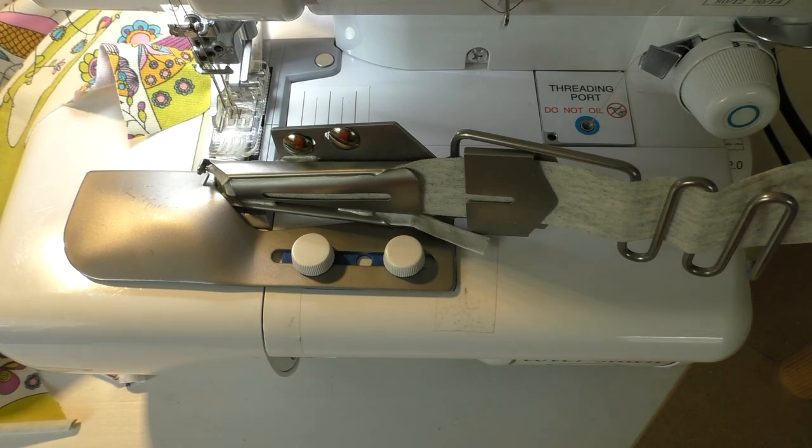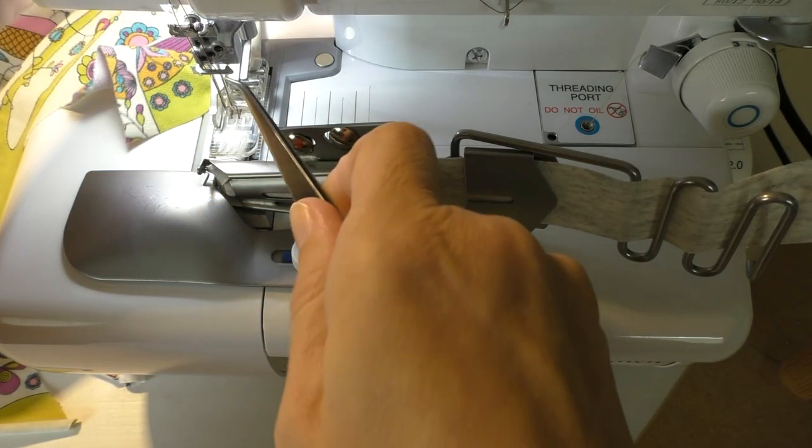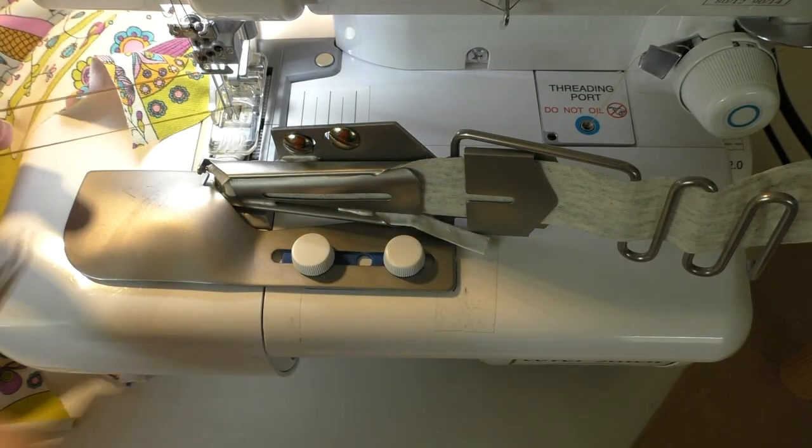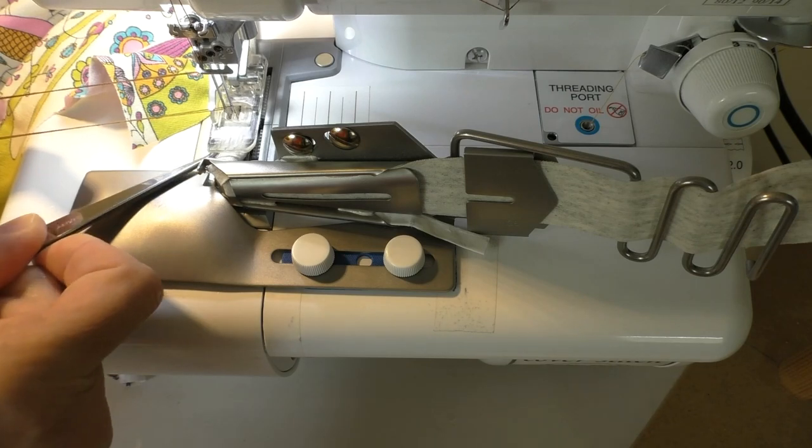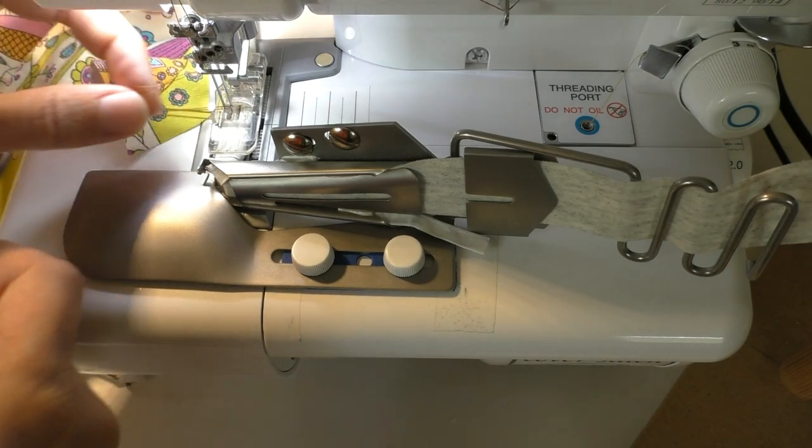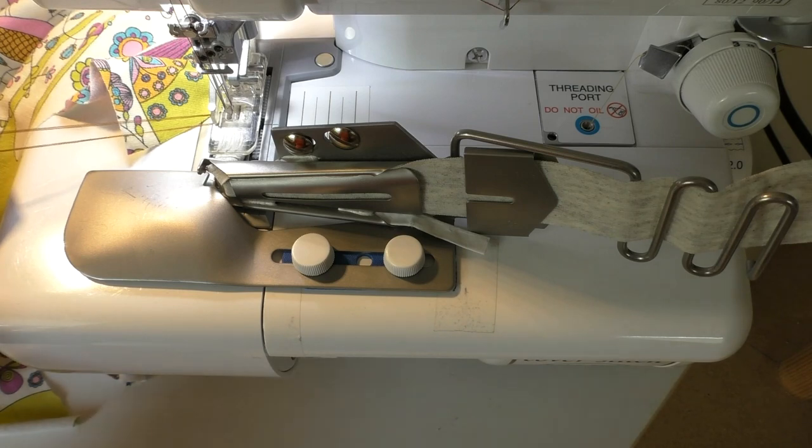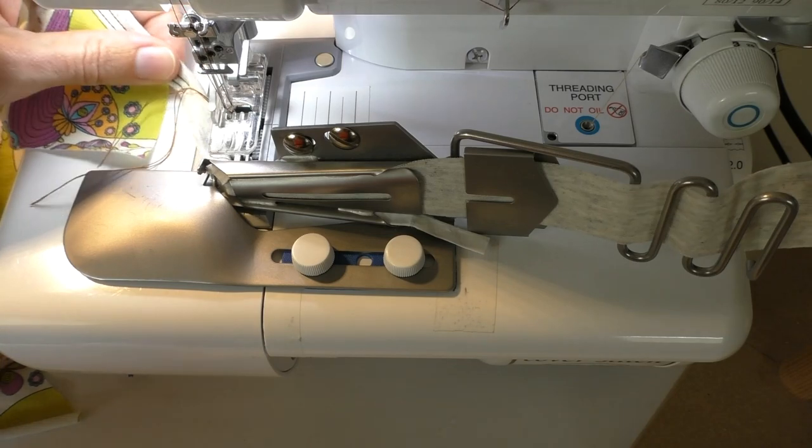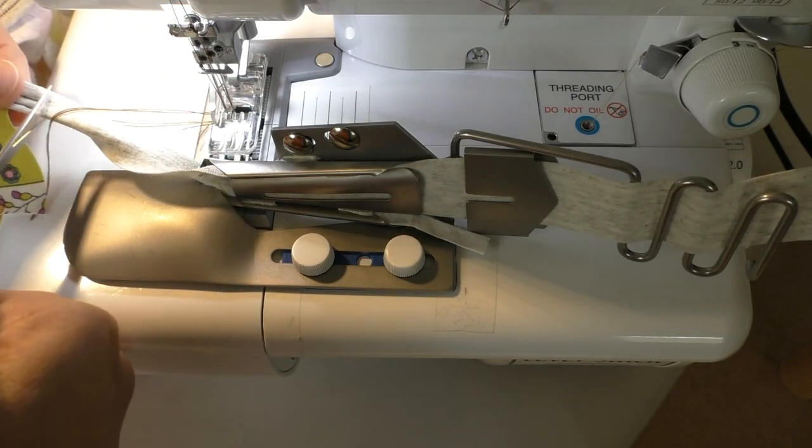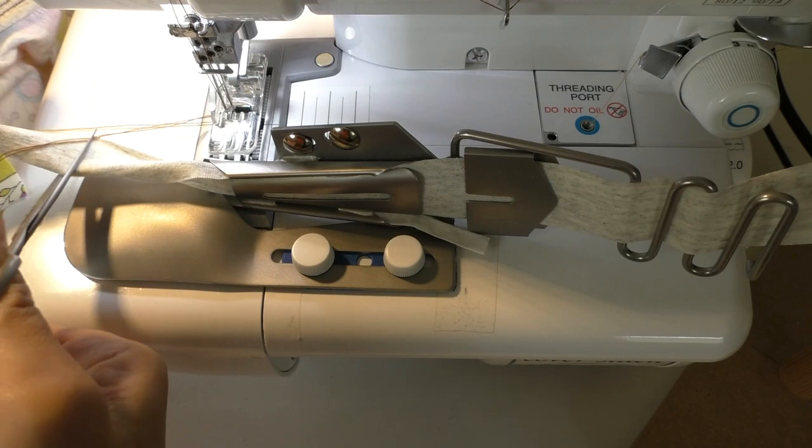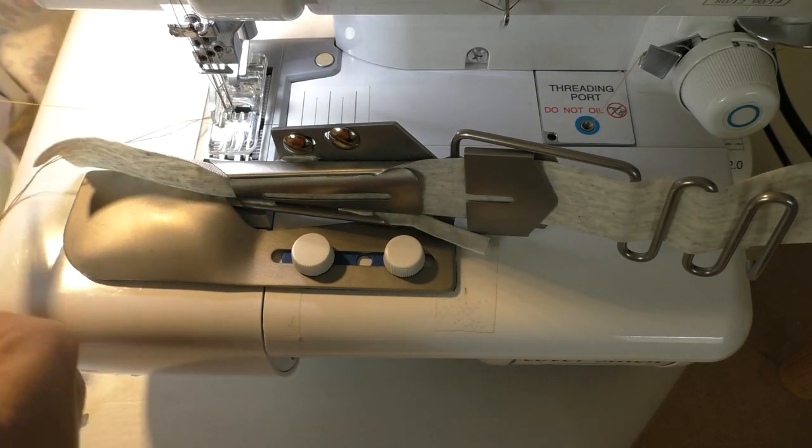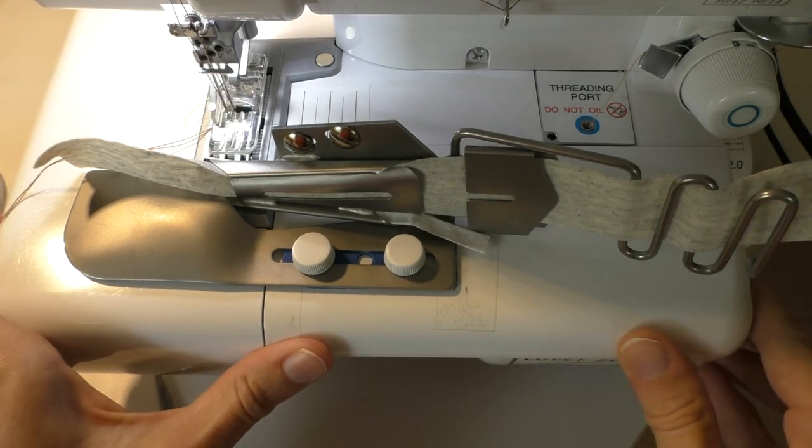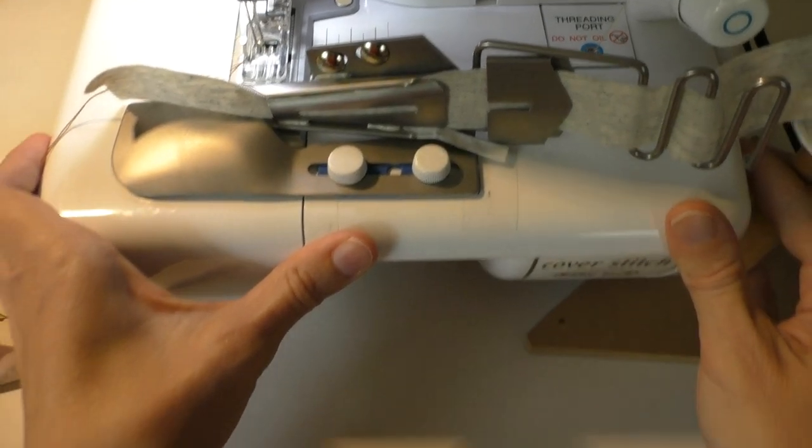So we've reached the end of that and I'm going to release the project from my machine as always. As with all removal out of the machine, pull your threads forward, swipe them out from underneath, grab your scissors, snip and pull to the back. Now I've still got quite a bit of binding on my strips so I'm actually just going to cut the strip here and then cut the looper so I can pull it out. Now let's have a look at what we produced, see if it did what we said it should.